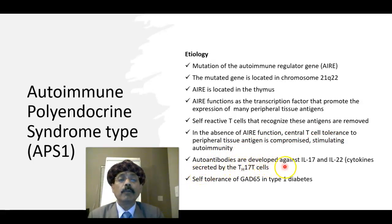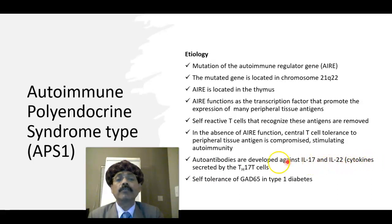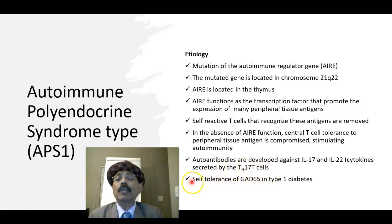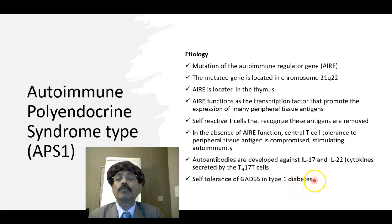Autoantibodies are developed against interleukin-17 and interleukin-22. These are the cytokines secreted by thymus-derived T cells. There will be loss of self-tolerance to GAD65 in type 1 diabetes due to malfunction of the thymus.